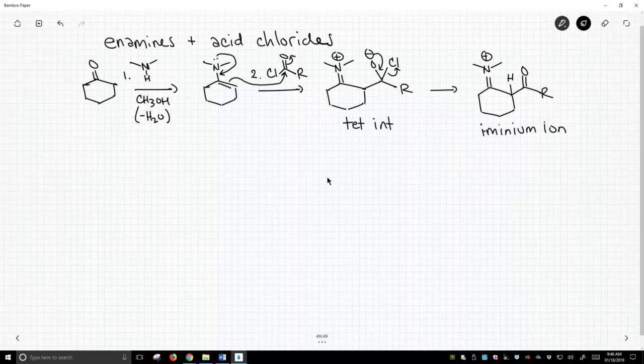Whatever the solvent is with this acid chloride in step two, and we haven't specified what it is, but there's something in there that can act as a base and will actually deprotonate this hydrogen and neutralize our enamine.